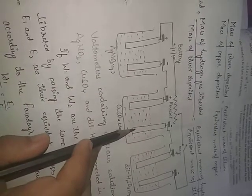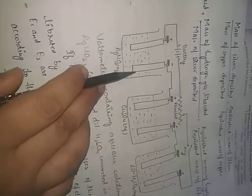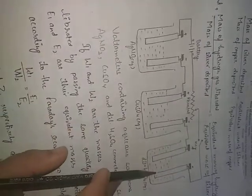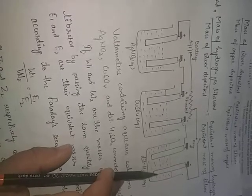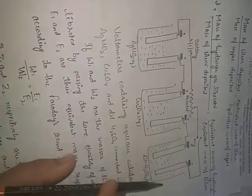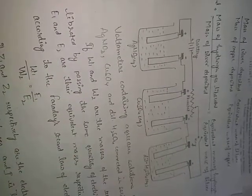The mass of silver deposited upon the mass of copper deposited equals the equivalent mass of silver upon the equivalent mass of copper. Hydrogen gas is liberated at the sulfuric acid cell, and the mass of hydrogen liberated upon the mass of silver deposited equals the equivalent mass of hydrogen upon the equivalent mass of silver.